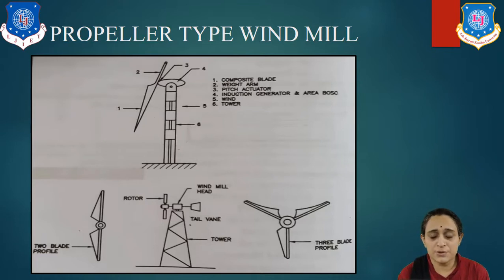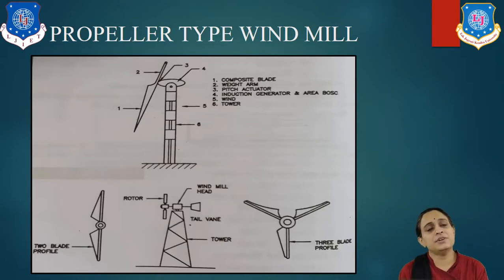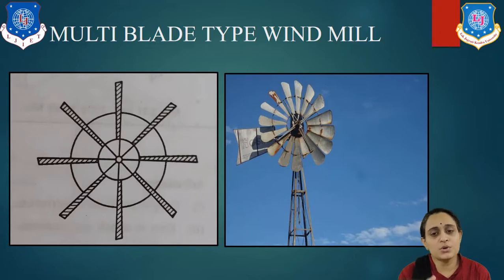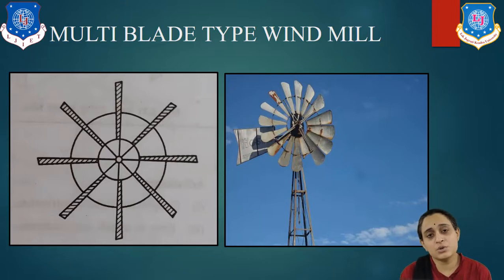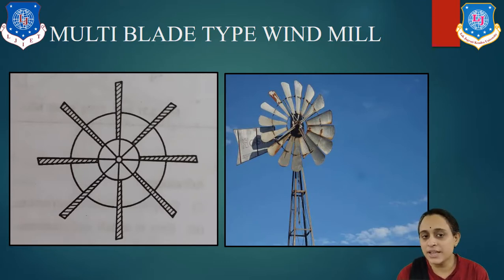Now let us look at the multi-blade windmill. In this design, there are many blades — more than three are considered multi-blade. To carry all the blades, two rings are used: one at the inner side and one at the outer side, as you can see. The RPM is around 60 to 80, and the efficiency of the system is around 20 to 25%.